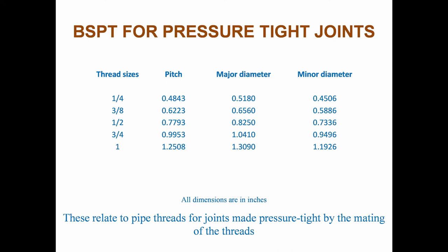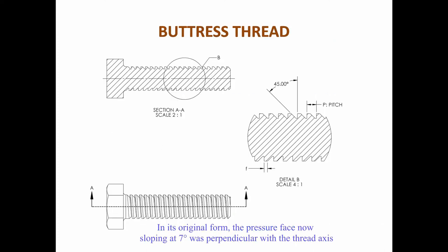Long screw threads relate to parallel external pipe threads used for long screw connectors specified in BS1387. A pressure tight joint is achieved by the compression of a soft material onto the surface of the external thread by tightening a back nut against a socket.